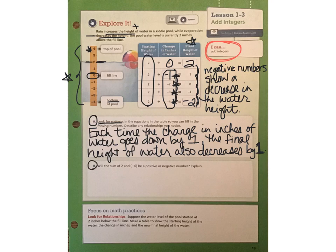Take a look at question B. Will the sum of two and negative six be a positive or a negative number? Explain. So pause the video while you think about this, and if you know how to solve it, then go ahead and do that on your paper. If you don't, then write down a question or something else that you might need to know in order to help you answer this question.